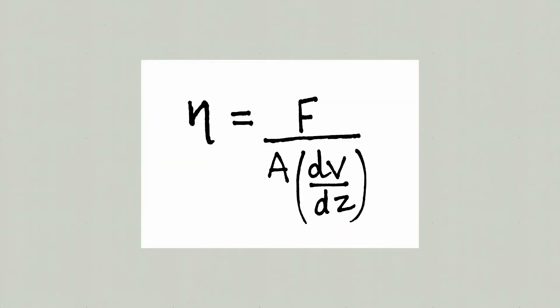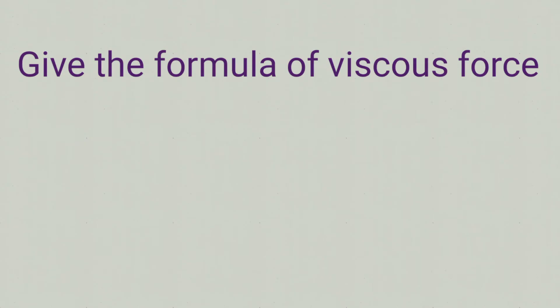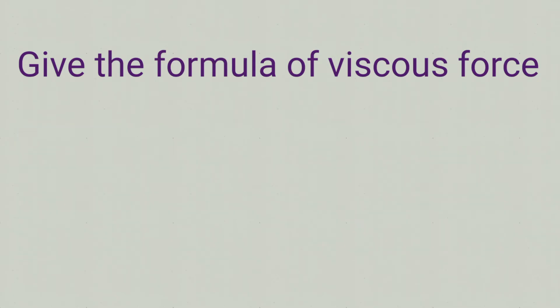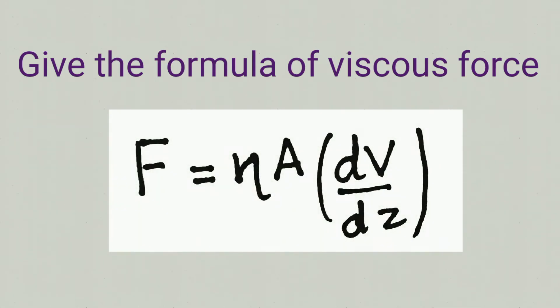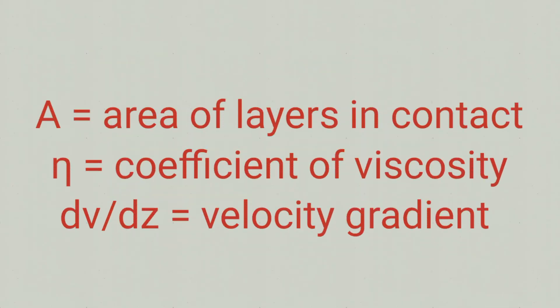Next question: Give the formula of viscous force. Upon rearranging the formula of coefficient of viscosity, we get the formula for viscous force as F equals η A into dv by dz. Here, A is the area of layers in contact, η is the coefficient of viscosity, and dv by dz is the velocity gradient.